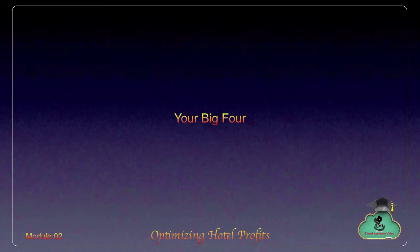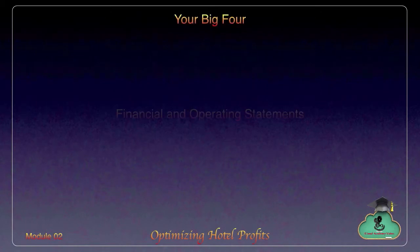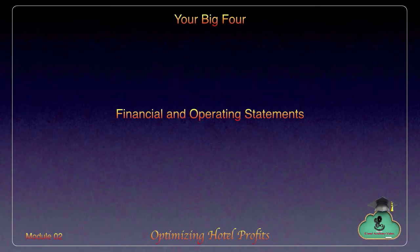Earlier in the course you learned about financial and operating statements and the differences between the two. You also heard about the big four of financial and operating statements: profit and loss statement, balance sheet, cash flow, and capital expenditure.